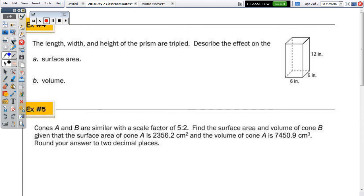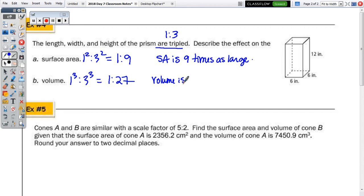So, number 4 says the length, width, and height of the prism are tripled. So, to the right, we can see we have a rectangular prism. Describe the effect on the surface area and the volume. Well, if their dimensions are tripled, the ratio. So, if we do 1 squared to 3 squared and volume 1 cubed to 3 cubed, that would give us a ratio of 1 to 9 and a ratio of 1 to 27. So, that means the surface area is 9 times as large and the volume is 27 times as large.